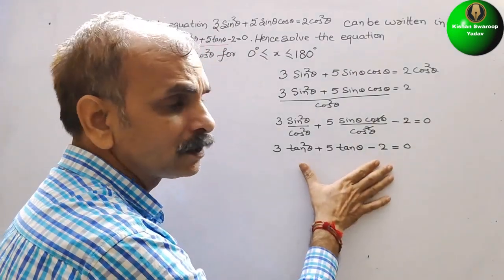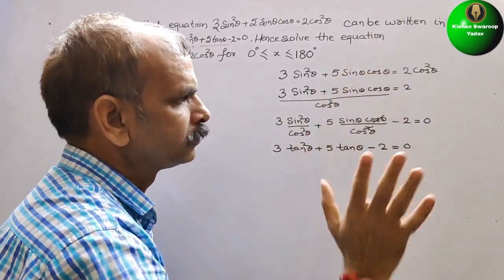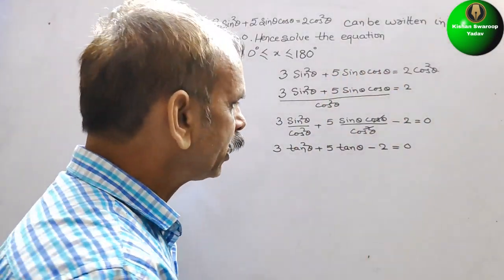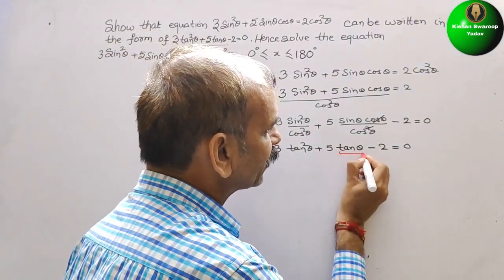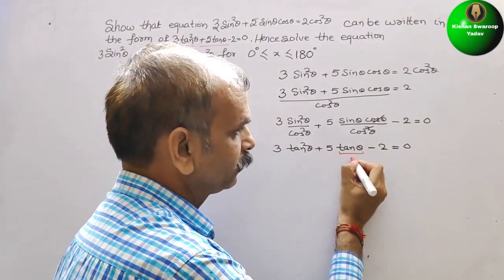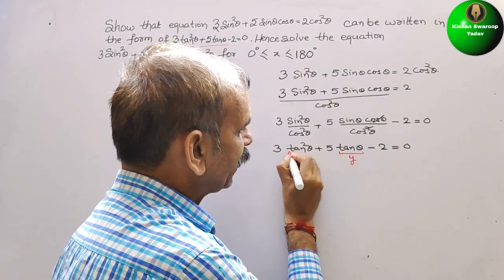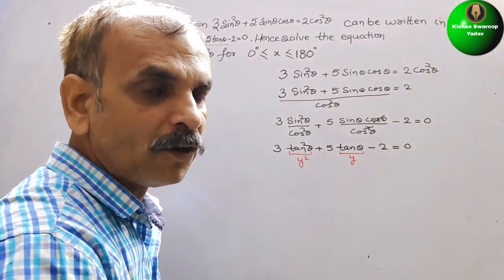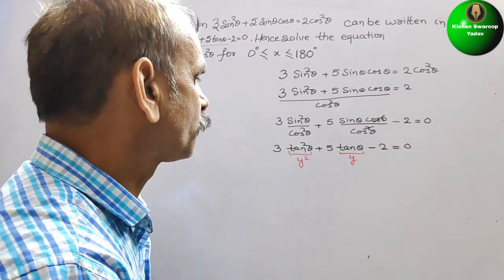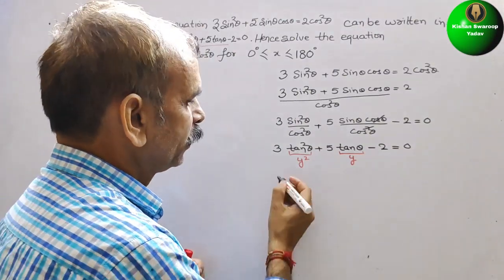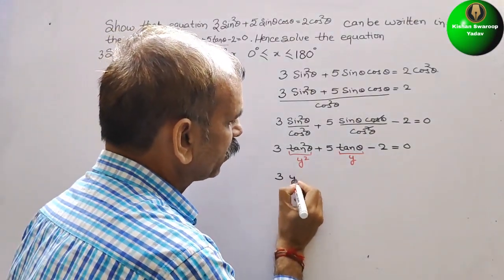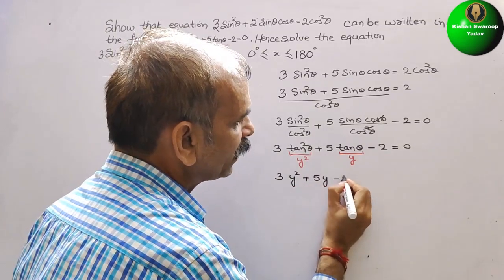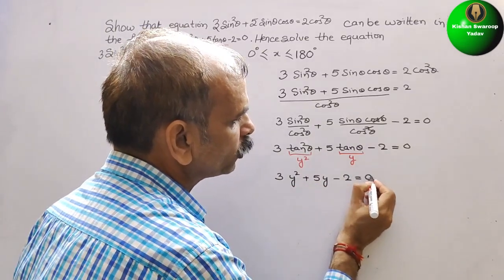We can work with either form. Here, we will take tanθ as y. So tan²θ is y².